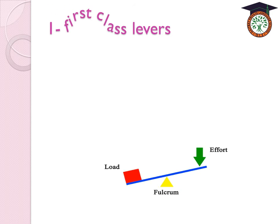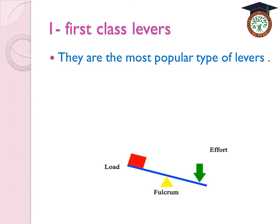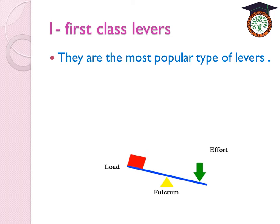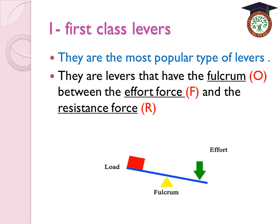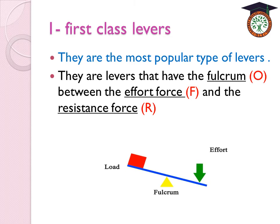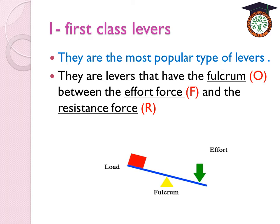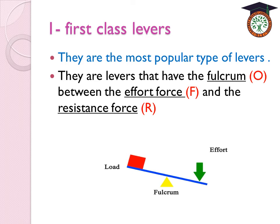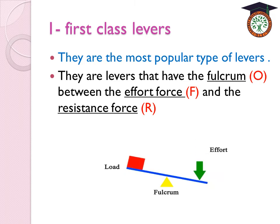Let's start with first-class levers, the most popular type. As we can see, the fulcrum lies in the middle of the lever. First-class levers are levers that have the fulcrum (O) between the effort force and the resistance force. The fulcrum, shown in yellow, lies between the resistance force (red) and the effort force (green).